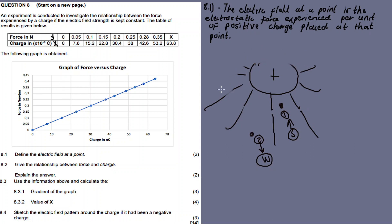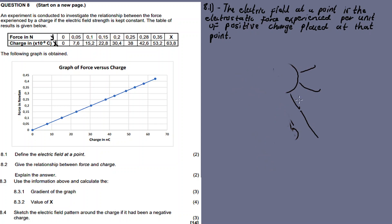The electric field varies from point to point. The further you move away from the charge, the weaker the electric field strength. It varies from point to point.